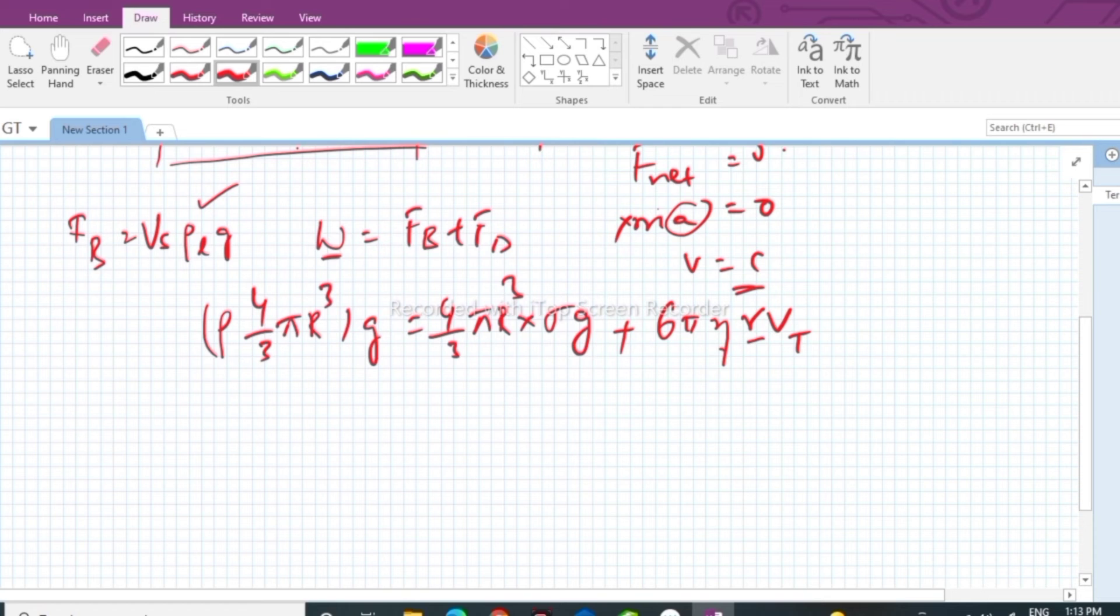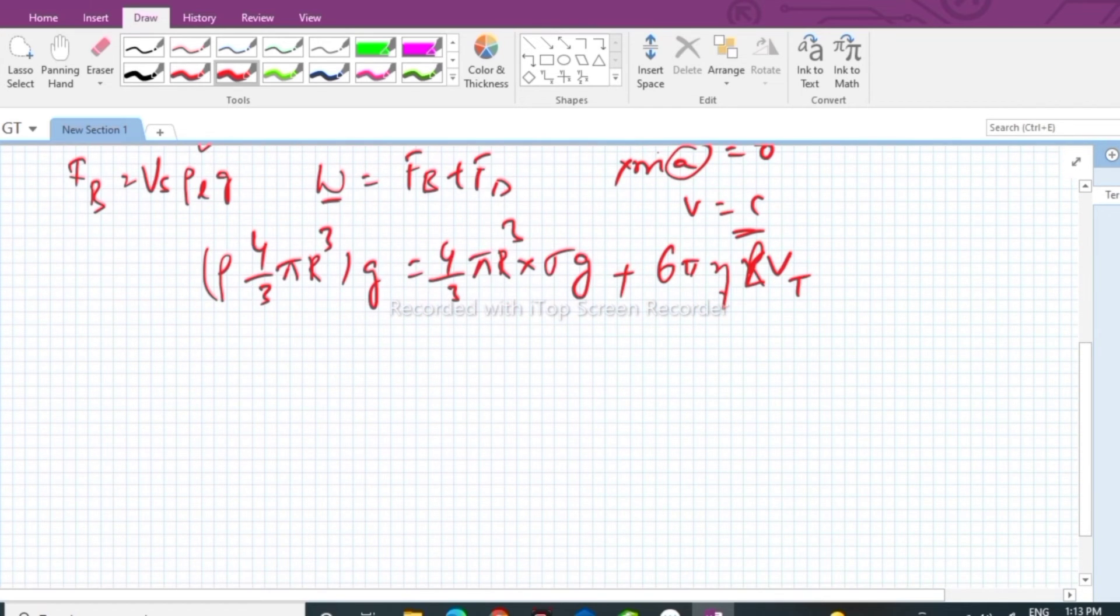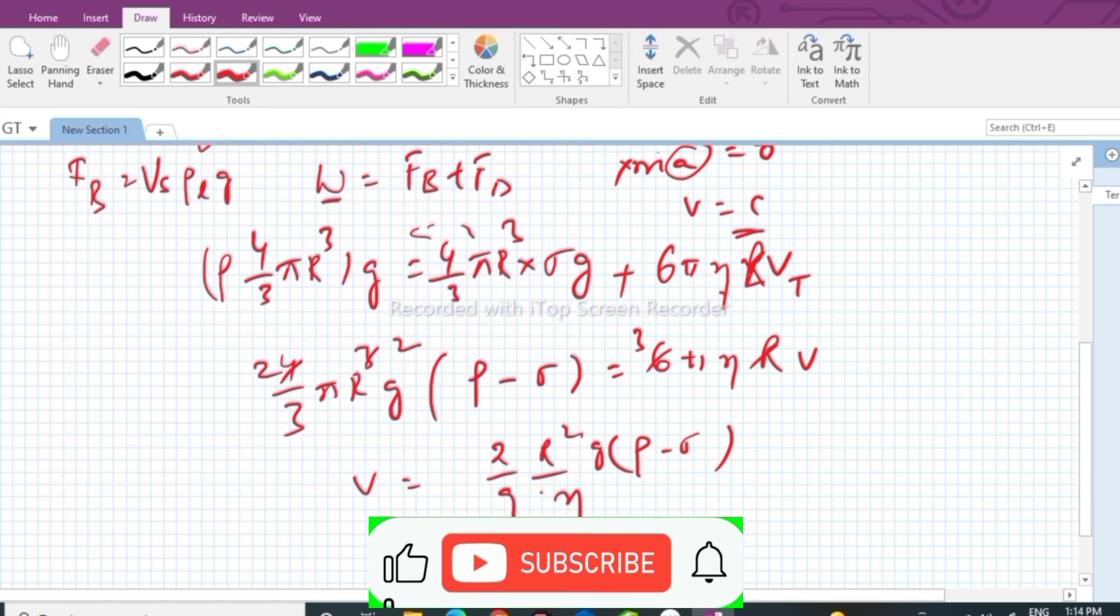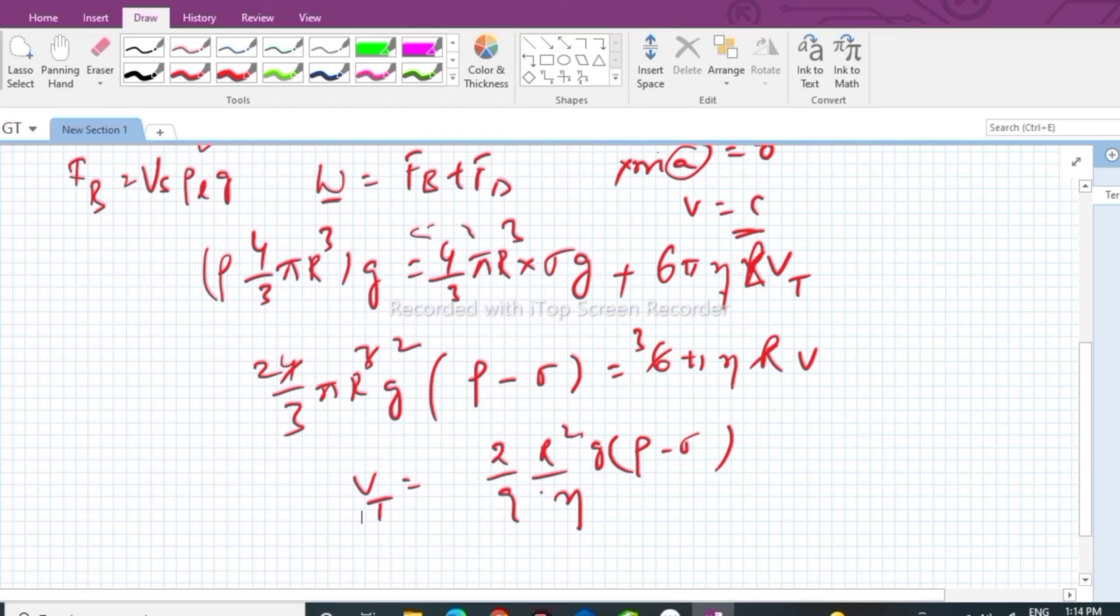So got to simplify this. Let us send all these terms this side. So if I take four by three pi r cube common multiplied by g, I am getting rho minus sigma equal to six pi eta r v. So one r we can cancel, two threes, two twos. So if you simplify, you finally get two by nine r square into g by eta, rho minus sigma. This is the expression for terminal speed.